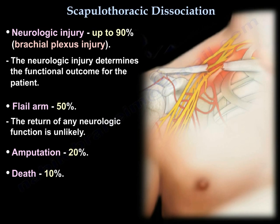Neurological injury occurs in up to 90% of cases. The neurologic injury determines the functional outcome for the patient. 50% result in a flail arm, and the return of any neurologic function is unlikely. 20% require amputation, and there is a 10% mortality rate.